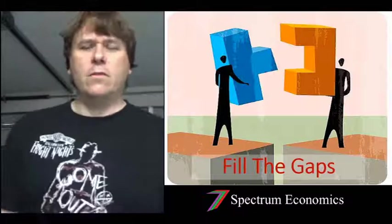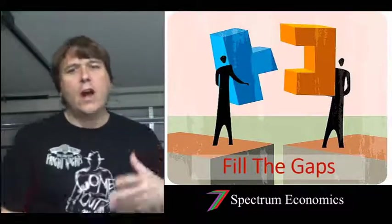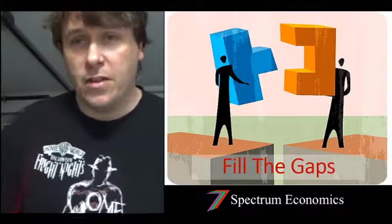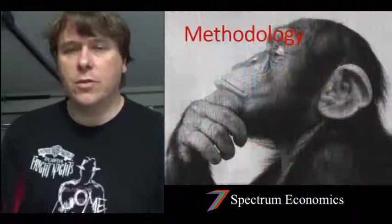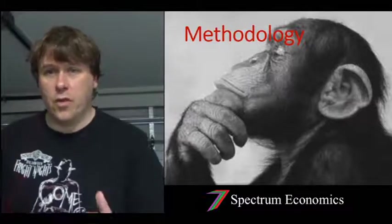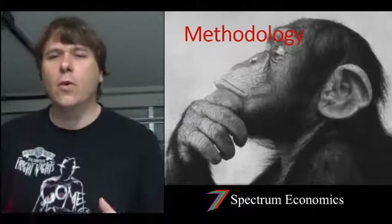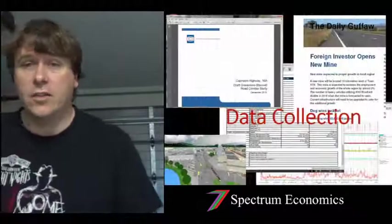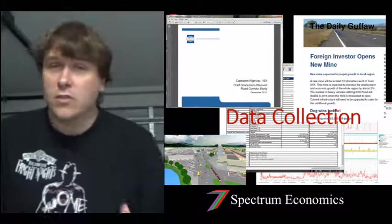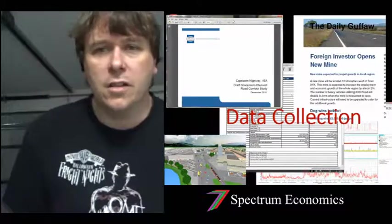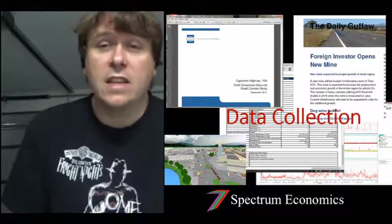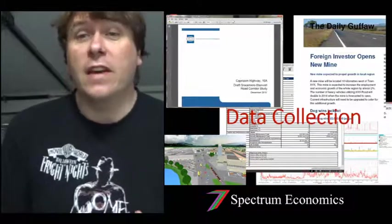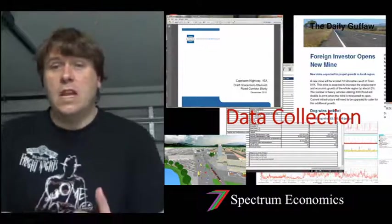Before we jump into assumptions, how do we get to the point where we realize we don't have enough information? You need to come up with a methodology — determine a way of going about doing the analysis. Once you determine your methodology and approach, you need to collect data, figure out what data you need, and go through the data collection process — whether it's guidelines, your own research, journal articles, databases, and so on. Your methodology would have identified some potential gaps, and the data collection would confirm those gaps and possibly identify a few others.